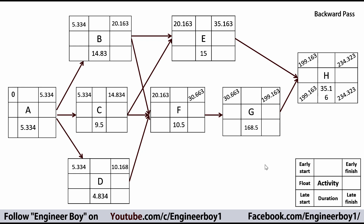Activity H is a critical activity because subtracting the late start from the early start gives zero float. We forward the late start of H to G and E, then subtract the duration of G and E to get the late start of each. Then we pass the late start of G backward to F and subtract the duration of F, giving a late start of F equal to 20.163.